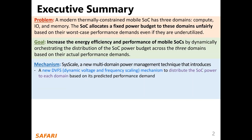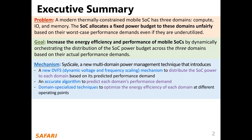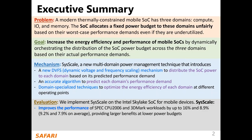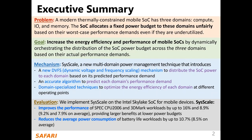First, a new DVFS mechanism to distribute the SoC power budget to each domain based on its predicted performance demand. Secondly, an accurate algorithm to predict each domain's performance demand. And finally, domain-specific techniques to optimize the energy efficiency of each domain at different operating points. We implement C-Scale on the Intel Skylake SoC for mobile devices. C-Scale improves the performance of SPEC CPU 2006 and 3DMark workloads by up to 16% and 8.9% while providing larger benefits at lower power budgets. C-Scale reduces the average power consumption of battery life workloads by up to 10.7%.